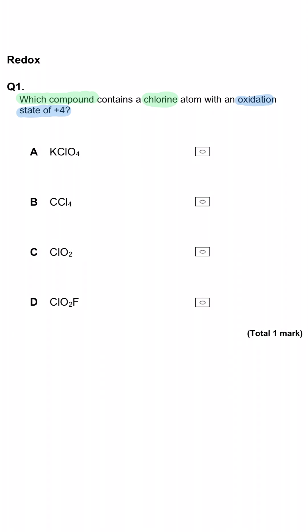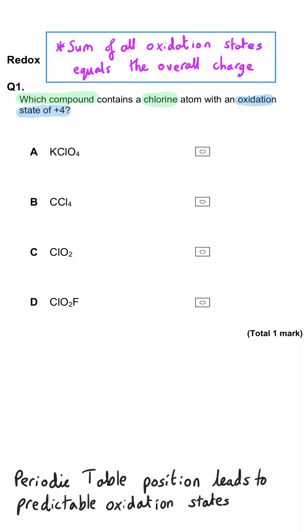There are two things that we have to remember to work out the oxidation state. We have to remember that the sum of the oxidation states of all of the atoms is equal to the total charge, and that most of the atoms will have a predictable oxidation state based on their position in the periodic table.